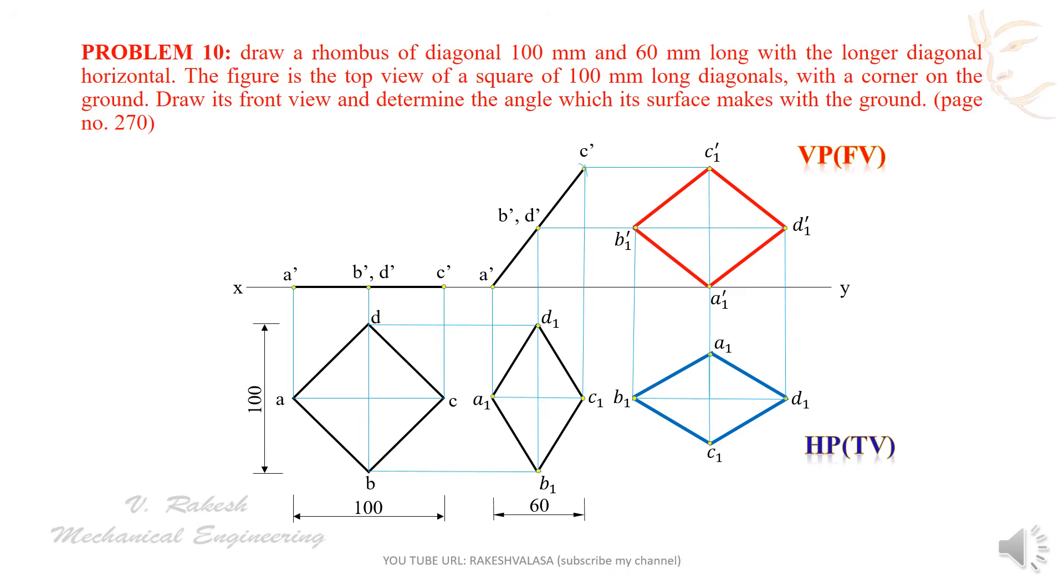This is the final front view and final top view. That is A1 B1 C1 D1. It falls on horizontal plane. Next, A1 dash B1 dash C1 dash D1 dash is the final front view that falls on vertical plane.